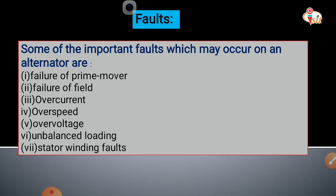Some of the important faults which may occur on the alternator are: failure of the prime mover, failure of field, overspeed, overcurrent, overvoltage, unbalanced loading, and stator winding faults. The most severe fault is the stator winding fault. We will discuss each one by one.